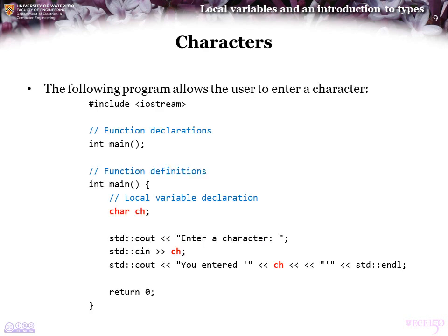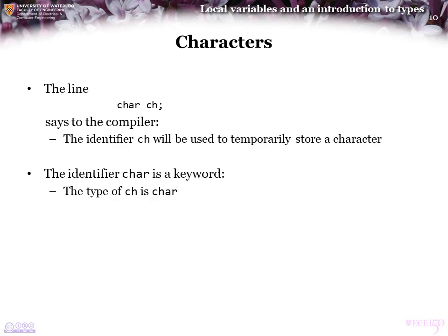This program allows you to locally store a character. Here we see ch declared as a char. The line 'char ch' says to the compiler that the identifier ch will be used to temporarily store a character — specifically, an ASCII character. The identifier char is, like int, a keyword in C++, and we say the type of ch is char.